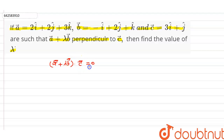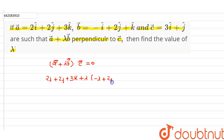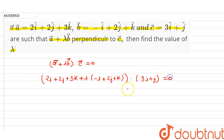Substituting the values: vector a is 2i plus 2j plus 3k, plus lambda times vector b which is minus i plus 2j plus k, all dotted with vector c which is 3i plus j, equals zero.